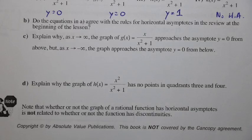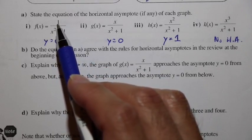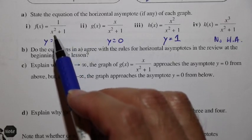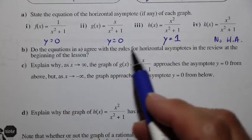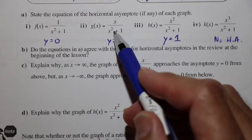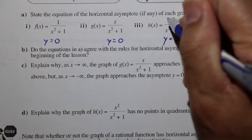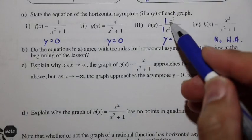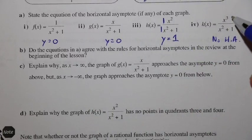Do these results agree with the rules reviewed at the beginning of the lesson? Yes. For the first two functions, the denominator degree is larger than the numerator degree — degree 2 vs degree 0, and degree 2 vs degree 1 — giving horizontal asymptote y = 0. For h(x), equal degrees with leading coefficients 1 over 1 gives y = 1. The degree-3-over-degree-2 case confirms no horizontal asymptote.